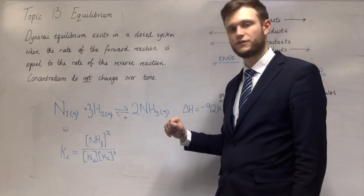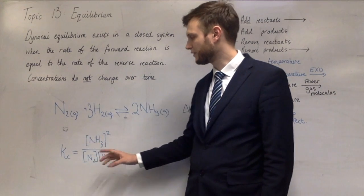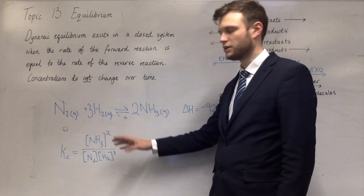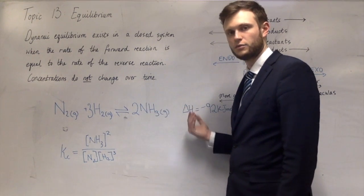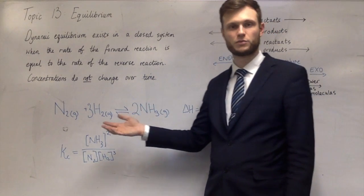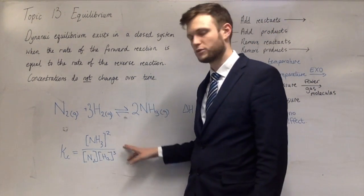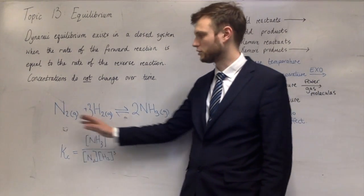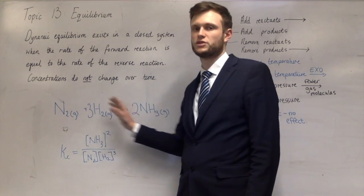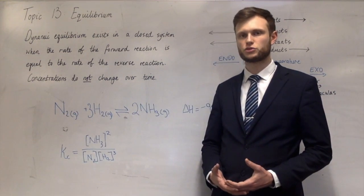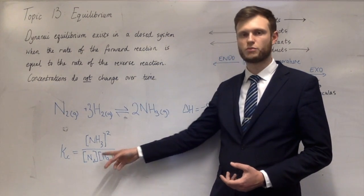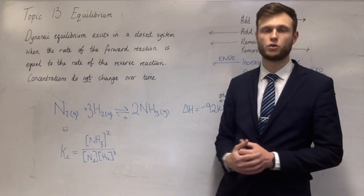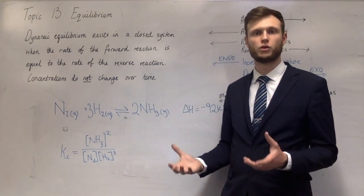If you put in these concentrations and the result equals one, that means there's the same amount of each. If the number is more than one, the numerator is bigger than the denominator — so there's more ammonia, meaning more products than reactants, and the equilibrium is on the right-hand side. If the number comes out less than one, the denominator is bigger, meaning you've got more nitrogen and hydrogen — the equilibrium has shifted to the left-hand side. You may be given concentrations of ammonia, nitrogen, and hydrogen and asked to substitute them into this expression to determine which way the equilibrium lies.